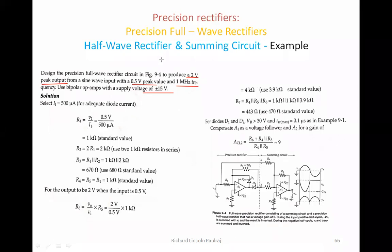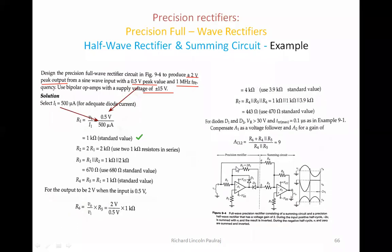Since 1 kΩ is standard, we keep R1 at 1 kΩ. Next, R2 should be a little higher than R1 for amplification purposes. We can take R2 as two times R1, so using two 1 kΩ resistors in series gives 2 kΩ. For R3, it is in parallel combination with R1 and R2, giving approximately 670 Ω, so we use the nearest standard value of 680 Ω.